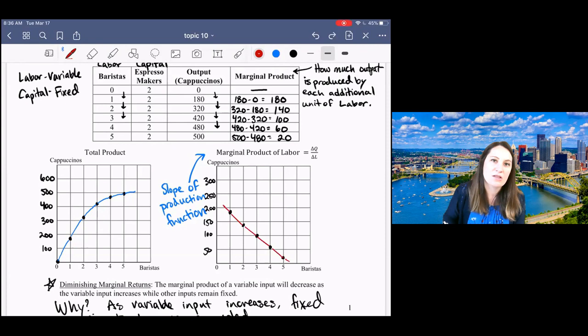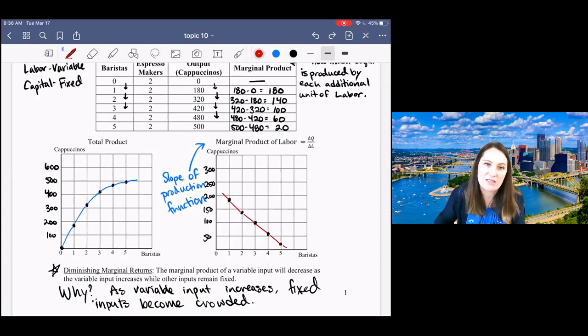The more workers I hire, the less output each additional worker will produce. Another way of saying that is that the slope of the production function is decreasing with labor. All of this to say that we always assume this decreasing marginal product or diminishing returns to scale as one property of our production function.